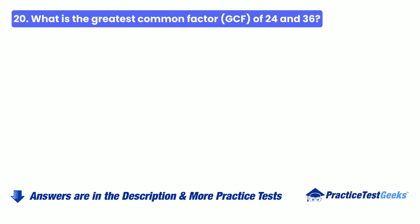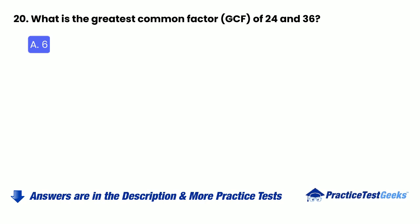Question 20: What is the greatest common factor (GCF) of 24 and 36? A. 6. B. 8. C. 12.